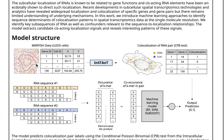Distance-D co-localization means the two genes tend to be located within distance D of each other, like these two genes in this figure. INSTANCE uses the conditional Poisson binomial test to evaluate D co-localization, and we can define gene pairs as those consistently found in close proximity in many cells.